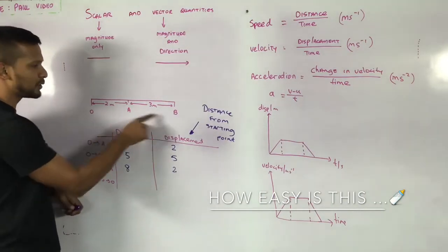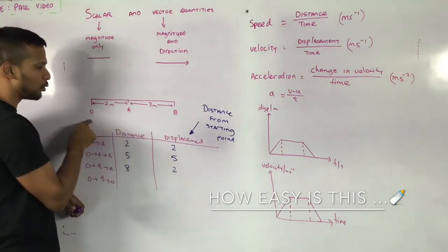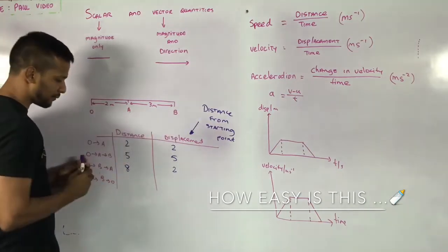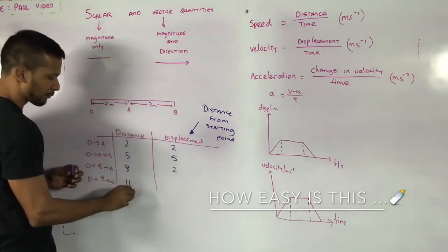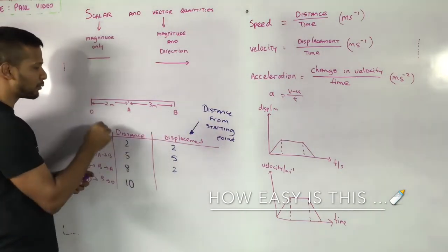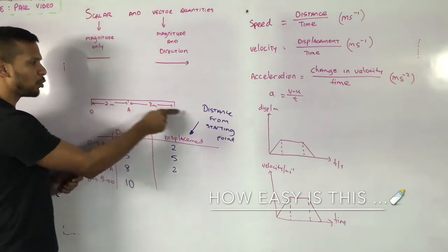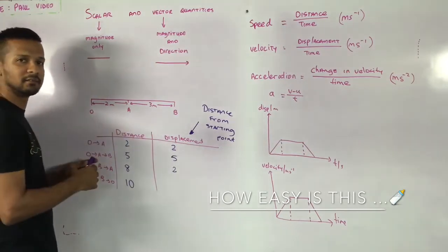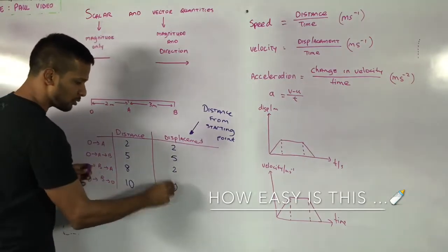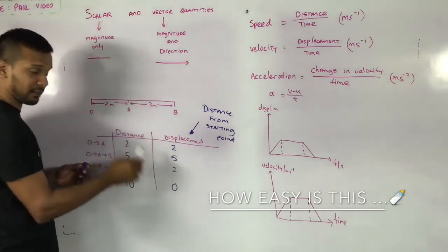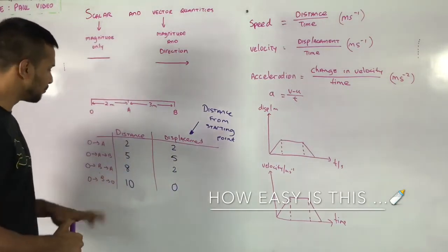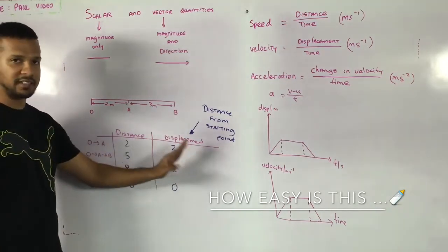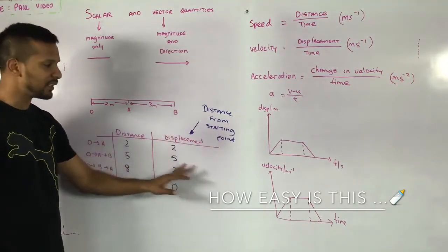Last example: O to B and back to O. My total distance travelled would have been five and five, so ten. While my displacement would be: I started at O and I finished at O, so how far am I? Zero. This is the difference between distance and displacement — it's simply the distance from a starting point. It's a vector quantity.